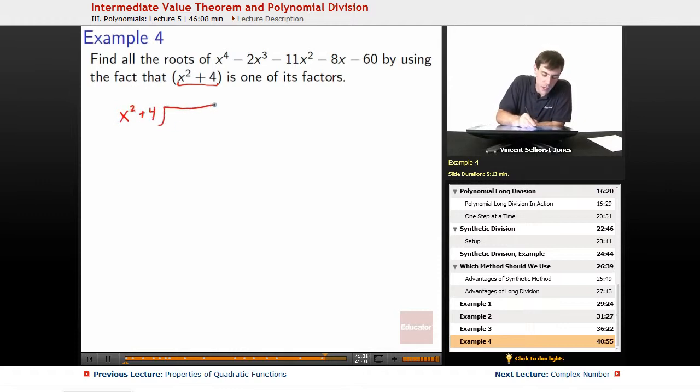So x squared plus 4, we plug in x to the fourth minus 2x cubed minus 11x squared minus 8x minus 60. Great. So x squared plus 4 goes into x to the fourth. Oh, but notice,